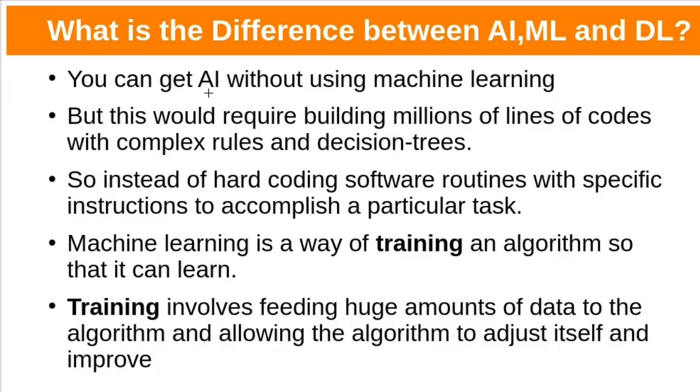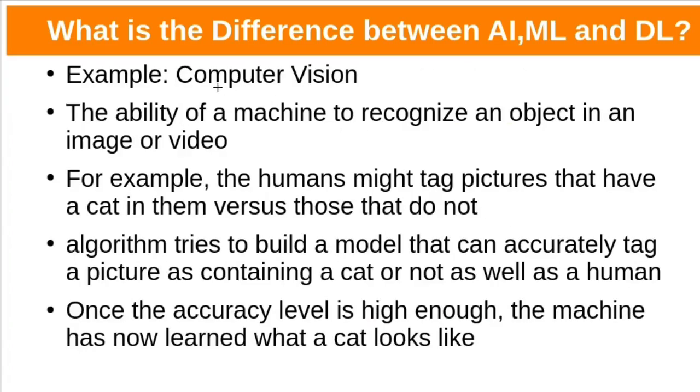We can get AI without using machine learning but it requires millions of lines of code to solve some problems. So instead of hard coding routines with specific instructions, we can train machine learning algorithms with data. Here training means feeding huge amounts of data to the algorithm. Based on training examples, the algorithm will make rules. In other words, machine learning algorithm will write the program for that specific task. An example task can be recognizing objects in image or video. Machine learning algorithm will build a model based on training data. Once model accuracy is high enough, that model can be used for prediction purposes.